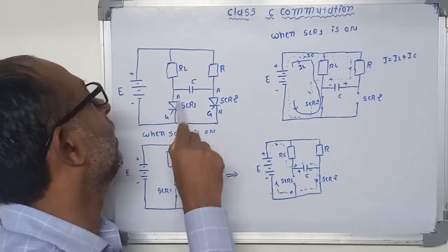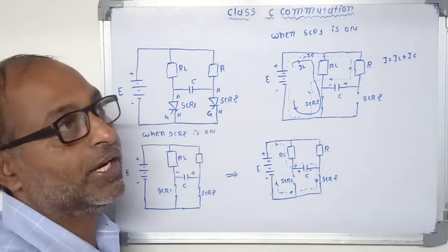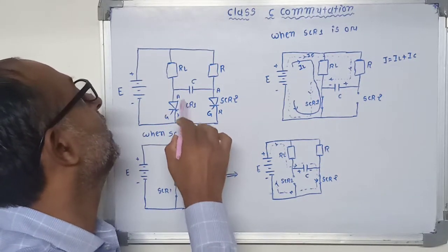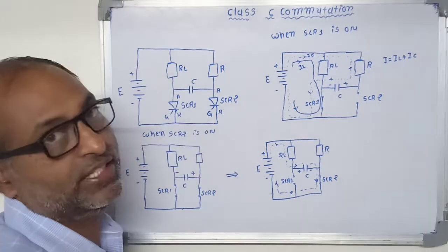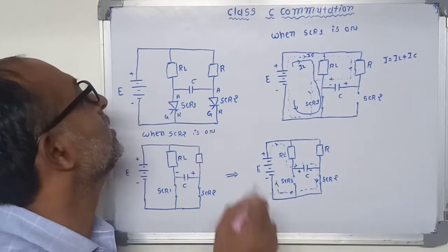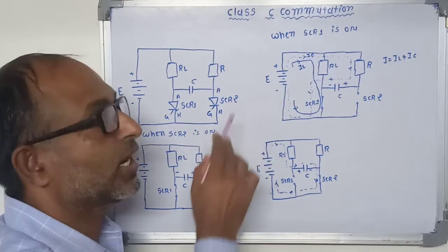Now here we are taking one SCR1 which is called main thyristor or SCR which is required to be turned off. Now this SCR1 is connected in series with the load resistance, that means that is our branch number 1. And another branch consists of one resistance connected in series with the SCR2.